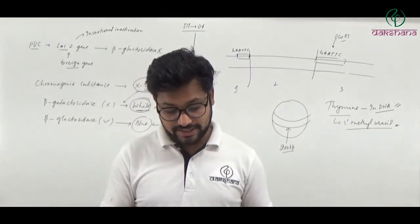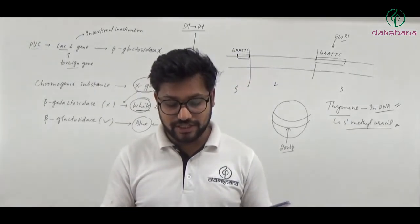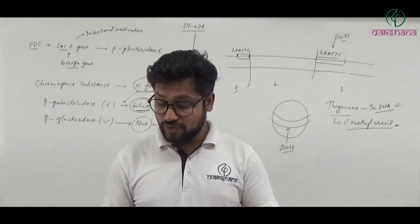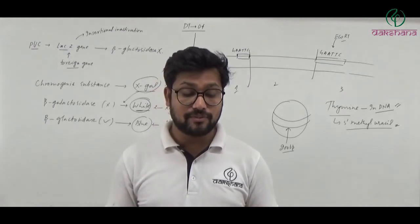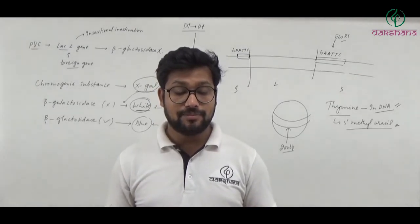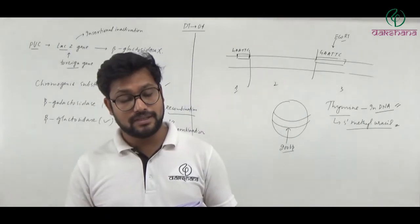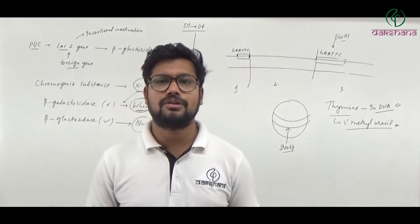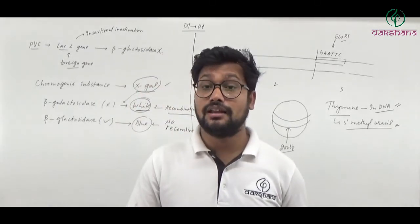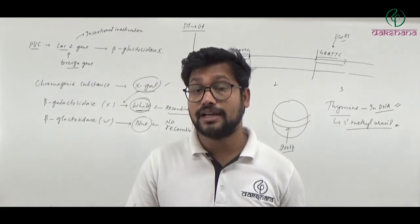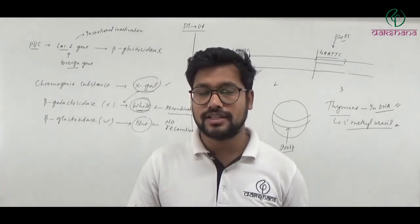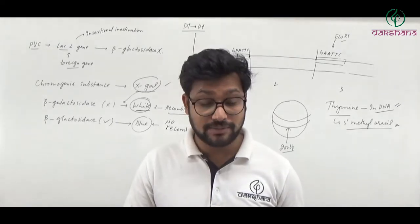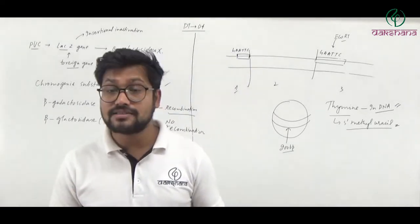Question number thirty-six: Which feature is not related to monocot embryo? This is a sexual reproduction of flowering plants question. Structures of monocot embryo include scutellum, coleoptile, and coleorhiza. Hilum is not a structure of monocot embryo — it is a structure of ovule. So hilum is the correct answer. Question number thirty-six's second option is the right answer.